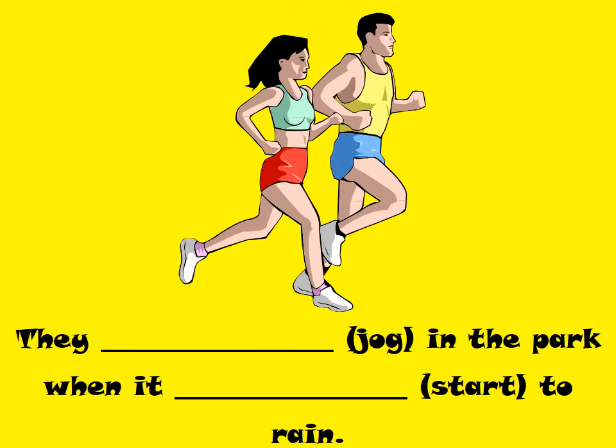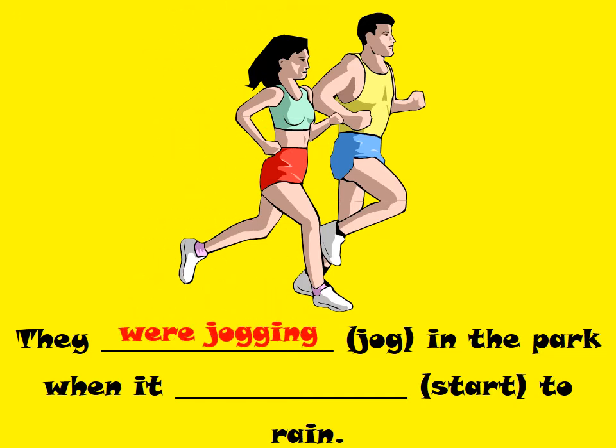They were jogging in the park when it started to rain. So they were jogging — like running — in the park. When it started to rain, it interrupted them.